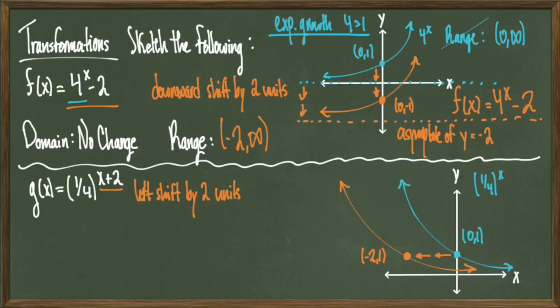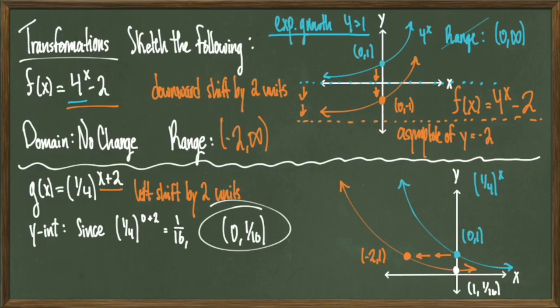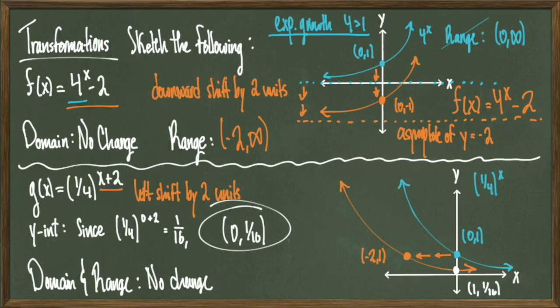Just as an exercise, we'll try to find the new y-intercept. Remember, y-intercepts are found by evaluating our function at the point x = 0. Doing that, we see that (1/4)^(0+2) comes out to be 1/16, therefore (0,1/16) is our new y-intercept. With graph transformations, normally the domain would be what changes with a left or right shift, but since our domain is already (-∞,∞), the domain and the range actually stay the same in this transformation. And by the same, I mean the same as the parent graph. So my domain is (-∞,∞) and my range is (0,∞), because the horizontal asymptote of y = 0 has remained unchanged.